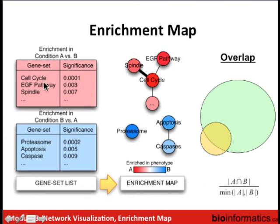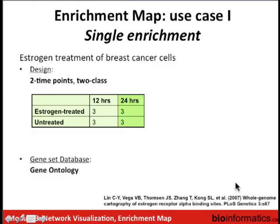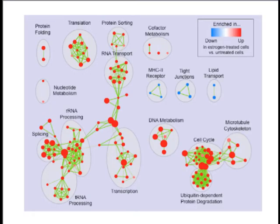For this demonstration we used a published dataset of gene expression measured from breast cancer cells that were treated with estrogen or untreated, with multiple time points. At one time point they had three replicates of estrogen-treated cells versus three replicates of untreated cells. We ran pathway enrichment analysis with GSEA and then made an enrichment map. In the GSEA case, pathways enriched in the top of the list are colored red, and in the bottom are colored blue — so red is enriched in condition A versus B, and blue is enriched in B versus A.